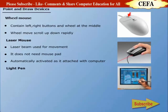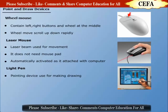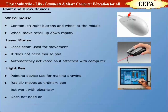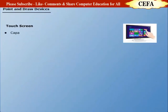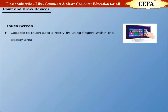Light pen is a pointing device used for making drawings. It rapidly moves on the screen just like an ordinary pen but works with electricity. Light pen does not need any alphabetic keys. Touch screen enables the user to touch the data directly using fingers within the display area. Touch screen is very simple and easy to use and is currently also used in mobile phones.